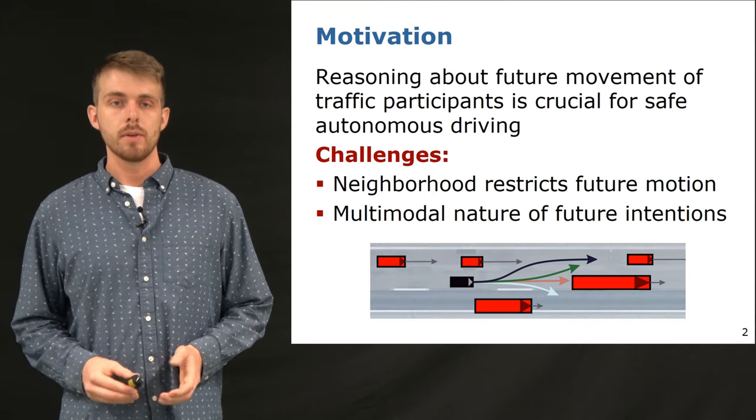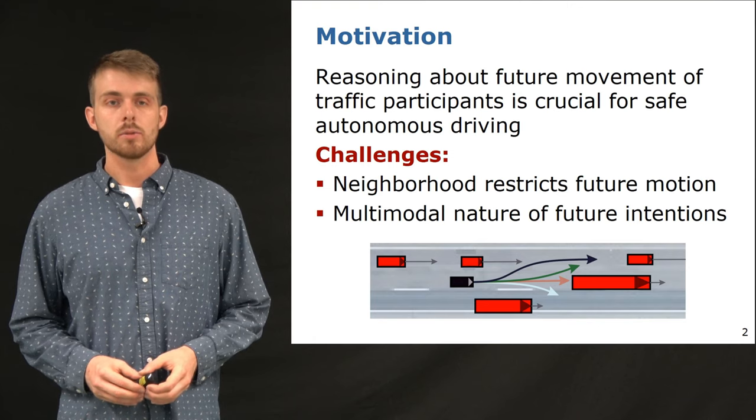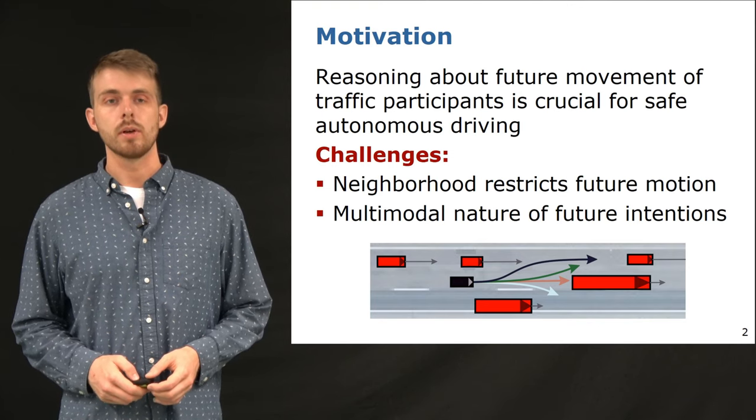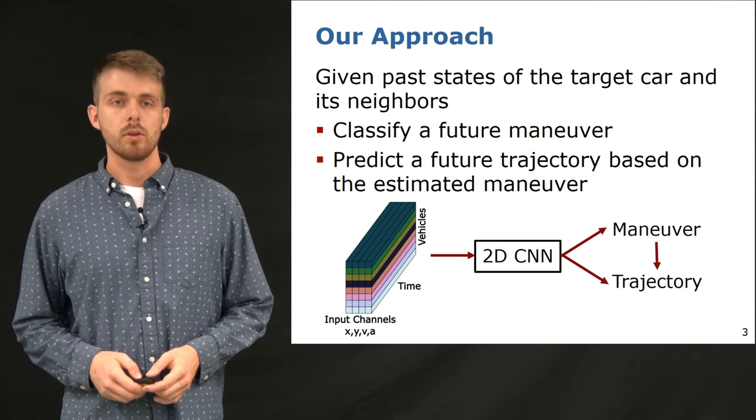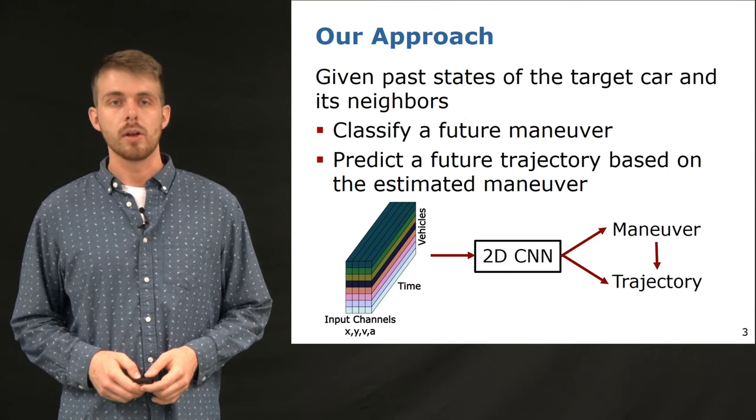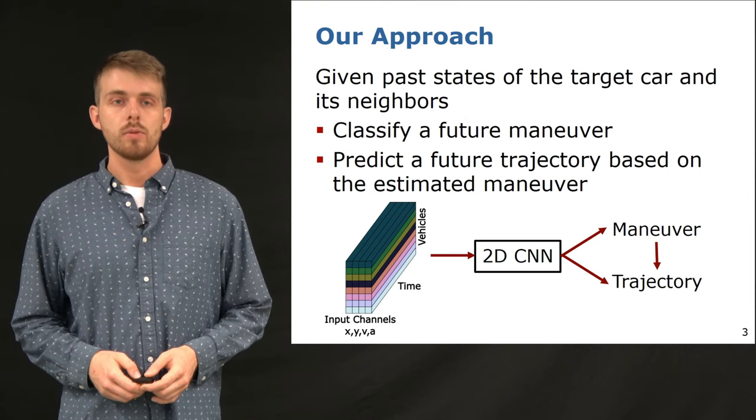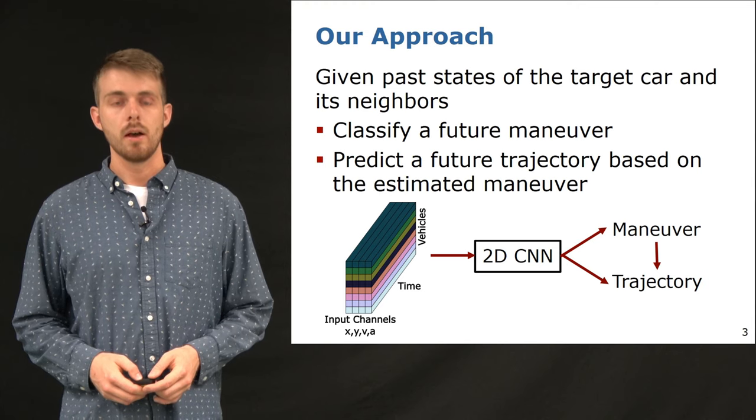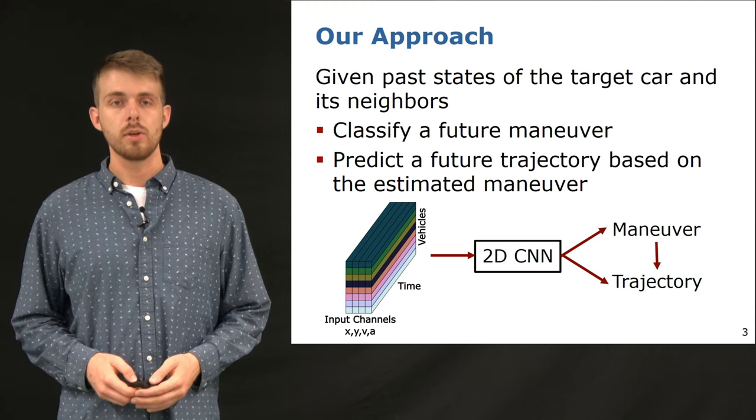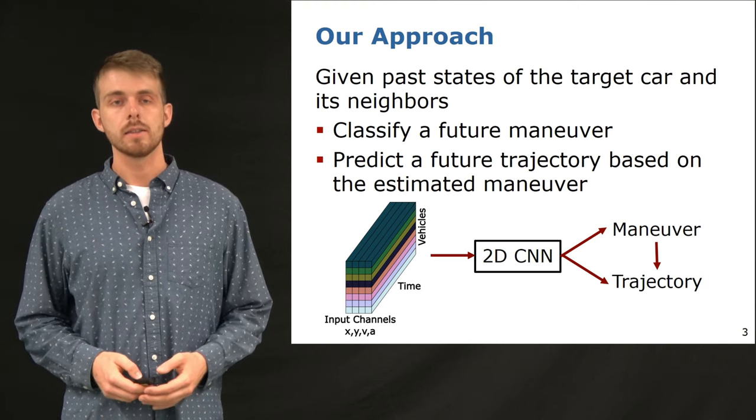Our proposed method takes the local neighborhood as well as multiple future maneuvers into account. Given the past states of the target car as well as its neighboring cars, our approach first classifies a maneuver from a predefined subset of possible maneuvers. After that we predict a future trajectory based on the past states and the estimated maneuver.